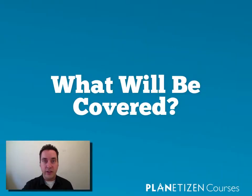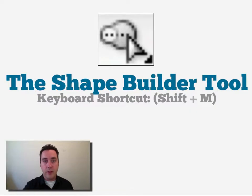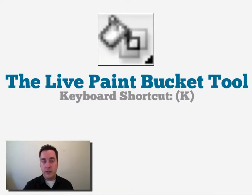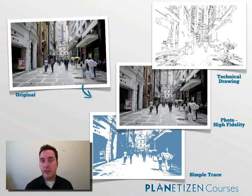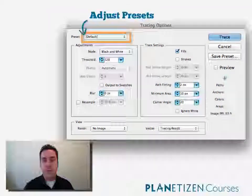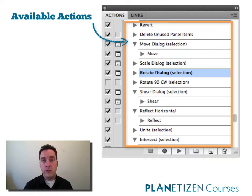We're going to cover a number of different topics, including some tools such as the ShapeBuilder and LivePaint tools, which are new to Creative Suite 5. We're going to cover the LiveTrace tool, which allows you to take a raster image into Illustrator and convert it into a vector image using a number of different filters. We're also going to talk about actions, which allow you to do repeated tasks over and over again to speed up your workflow.